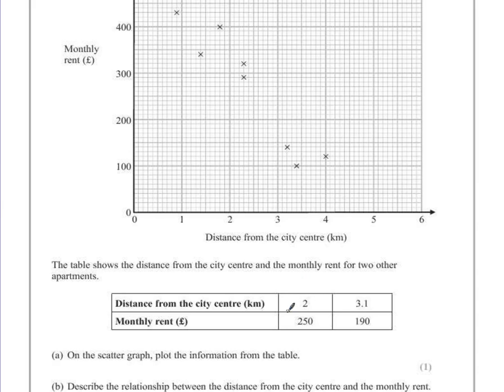So the first part of the table says if the distance is two kilometers, so let's find two kilometers, which is here. We want to go up to a monthly rent of £250, which is exactly halfway between £200 and £300. And then we put a small cross, being as accurate as you possibly can. You're usually allowed to be within a square or two either side, but be as close to that point as you can.